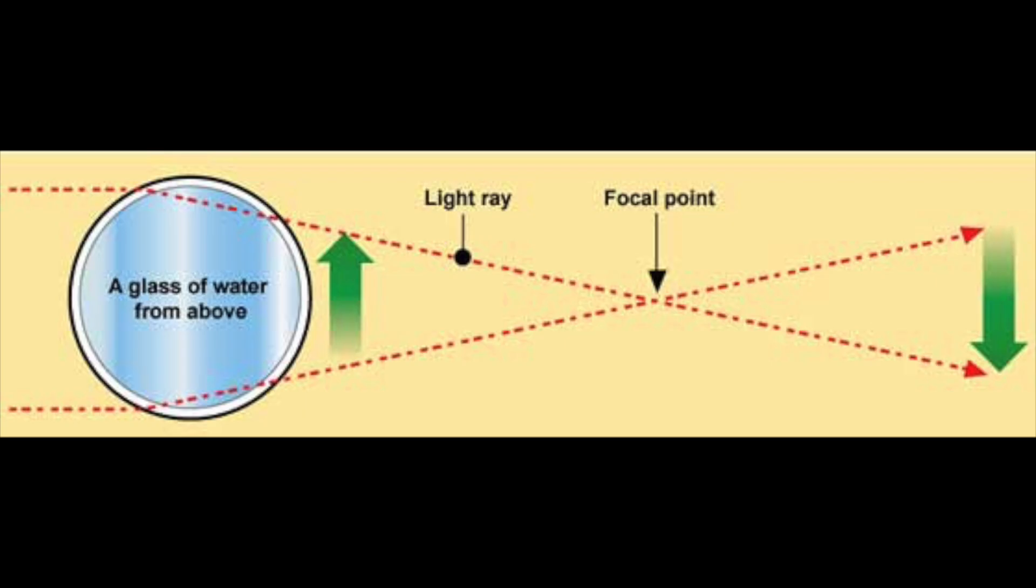As seen here in the diagram, when the light goes through the glass of water, it comes down to a focal point, and then back to the index card with the arrow for the reverse.